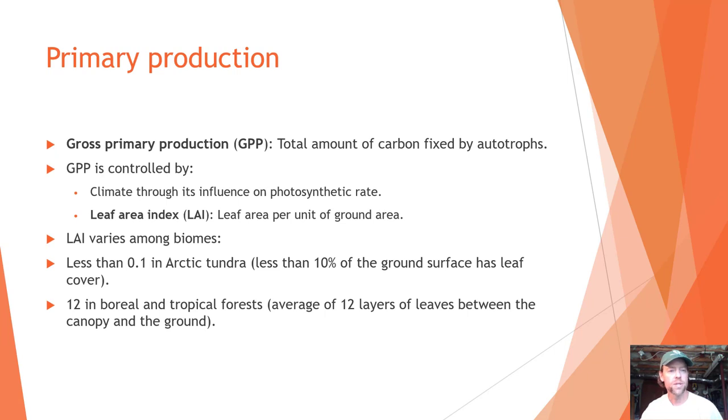Gross primary production, or GPP, is the total amount of carbon that is fixed by autotrophs.